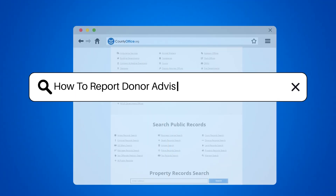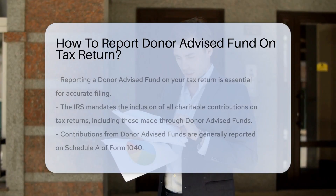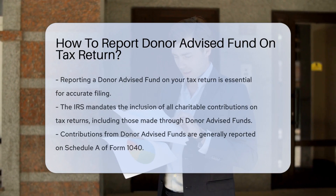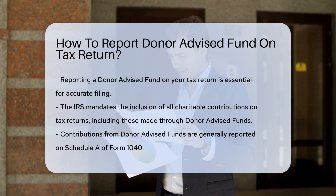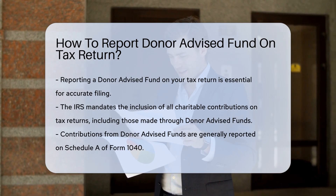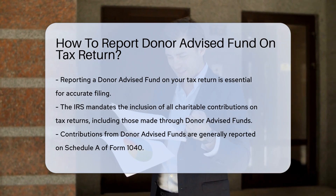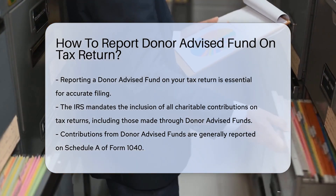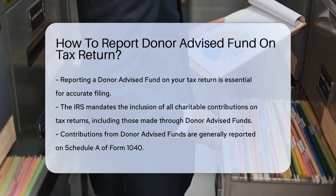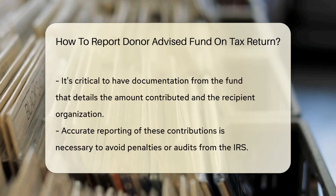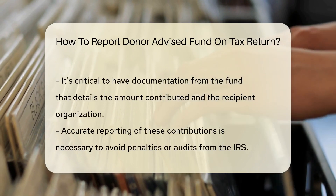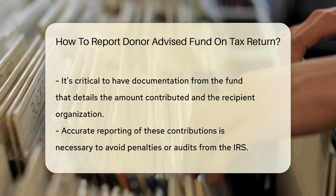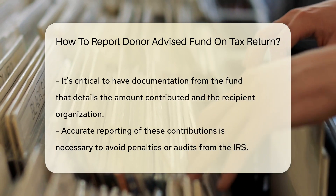How to Report a Donor-Advised Fund on Tax Return. Reporting a donor-advised fund on your tax return is crucial for accurate filing. The IRS requires taxpayers to include all charitable contributions, including those made through a donor-advised fund. These contributions are typically reported on Schedule A of Form 1040.